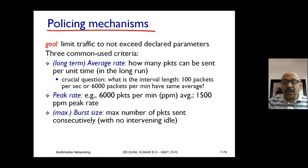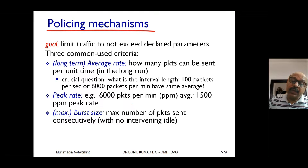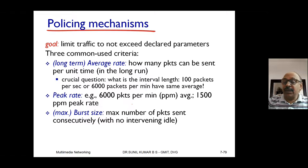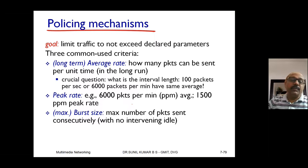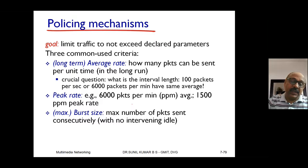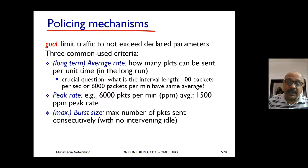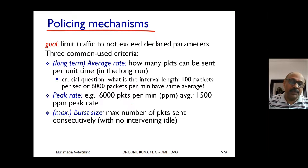So in spite of FIFO, priority, round robin, and weighted fair queuing, there are still different possible cases in the network. The flow of packets in the network will not always be constant — they vary randomly. When the flow of packets is varying randomly, it is a tough situation to handle these packets effectively at each router. There are three different criteria we must consider while giving service at the router. The goal of the policing mechanism is to limit the traffic so as not to exceed declared parameters.